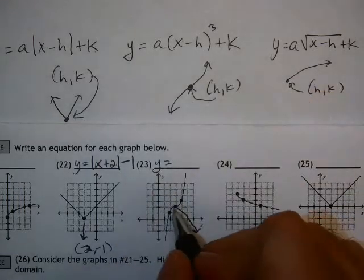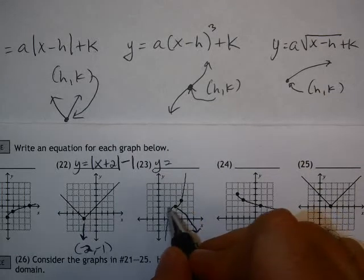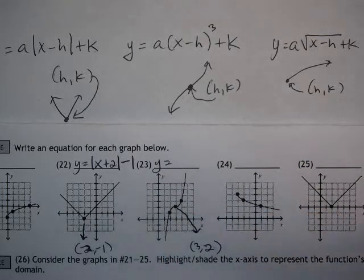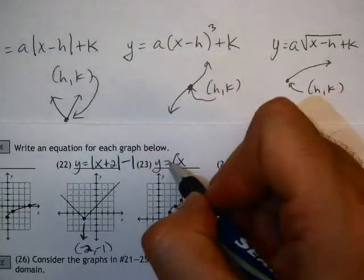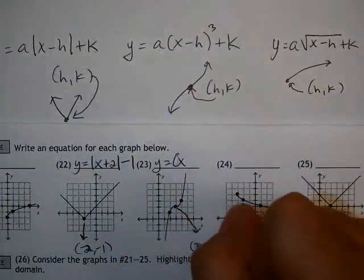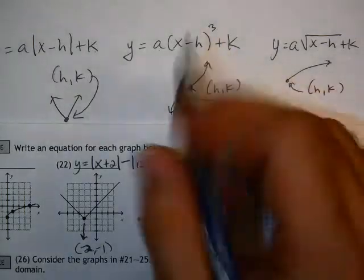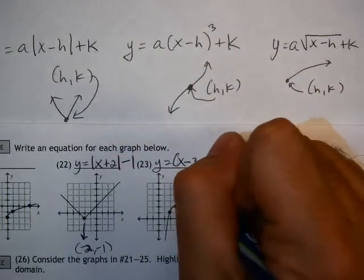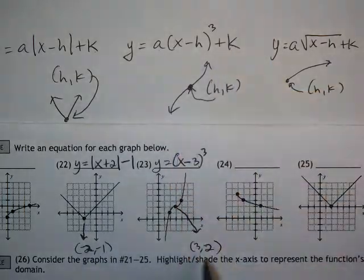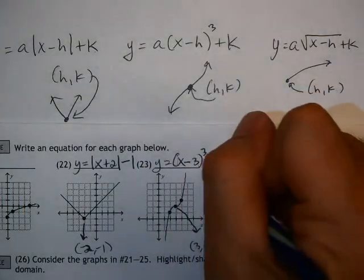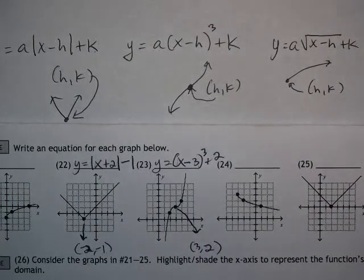y equals. Now it doesn't get any wider. It goes right one up one and left one down one. It doesn't get any wider. It doesn't flip upside down. So it's just x. So the a value, like the first one, is just a 1. Now this positive 3 will go in for h, which means it becomes minus 3 cubed. And then the k value is that positive 2 plus 2. So there's my equation for number 23.